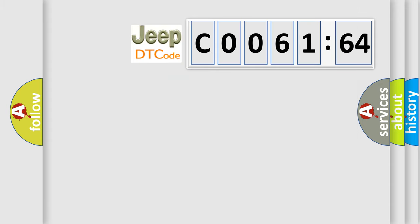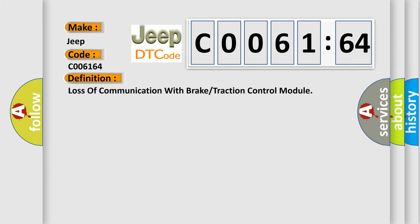So, what does the diagnostic trouble code C0061:64 interpret specifically for Jeep car manufacturers? The basic definition is: Loss of communication with brake or traction control module.